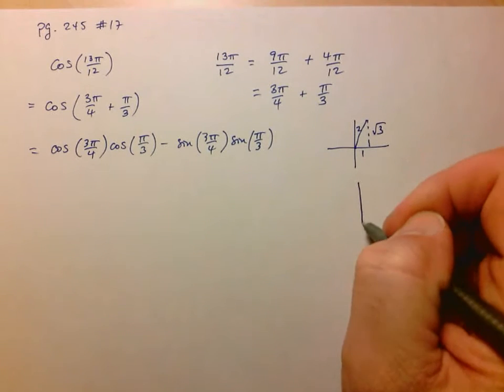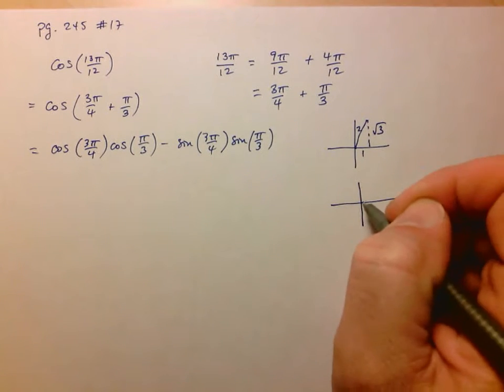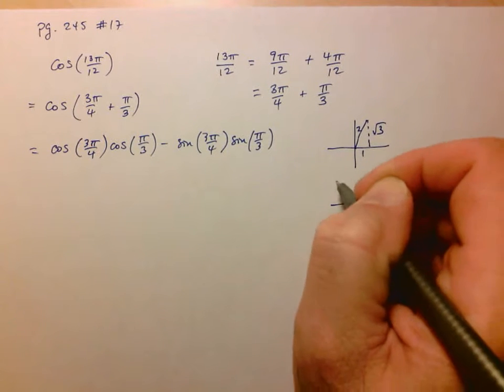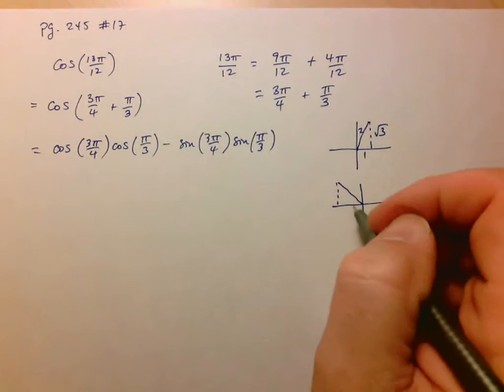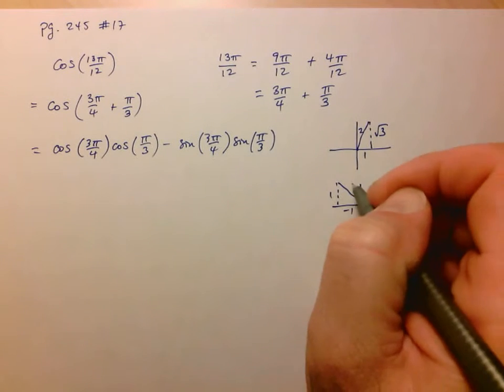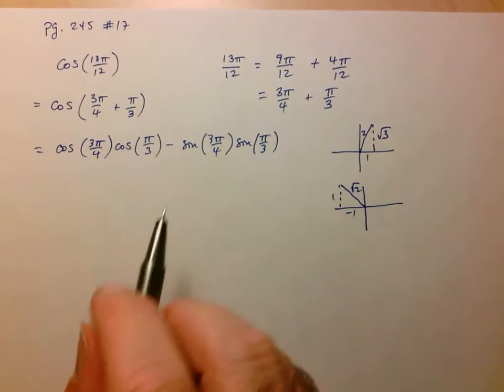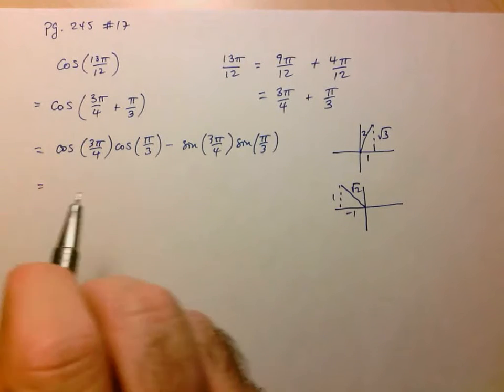And then here let's do 3π over 4. It's going to be π over 4, 2π over 4, 3π over 4 in the second quadrant. So this is going to be negative 1, 1, root 2. And now I can just read my answers off these.